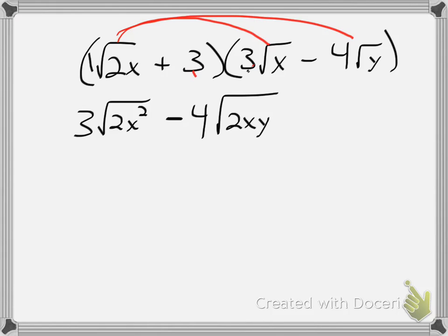Inner is going to be 3 times 3 square root of x, and since the 3 itself has no radical attached to it, it's just going to be 3 times the 3 on the outside, so plus 9 square root of x.